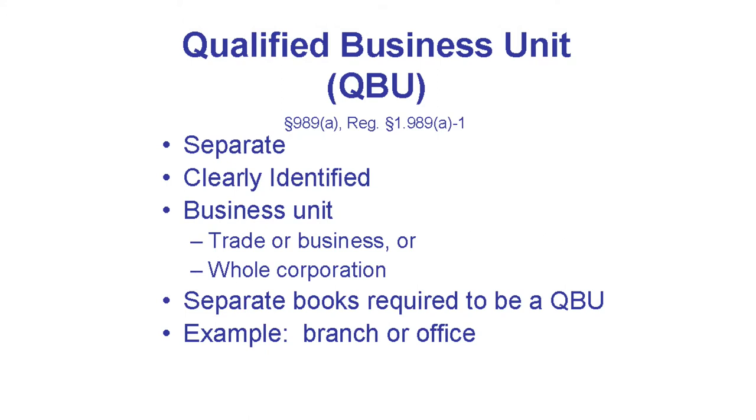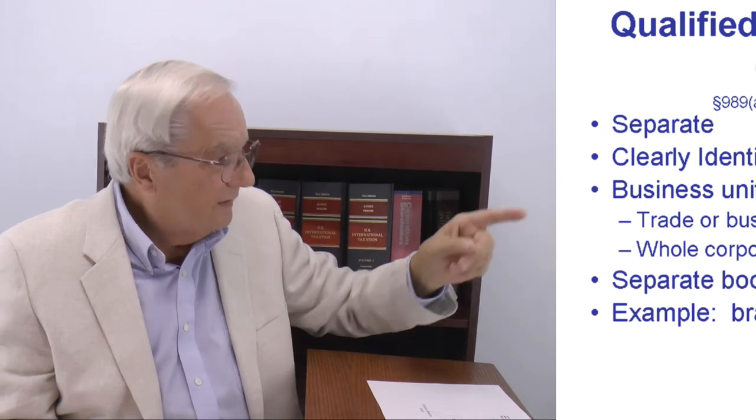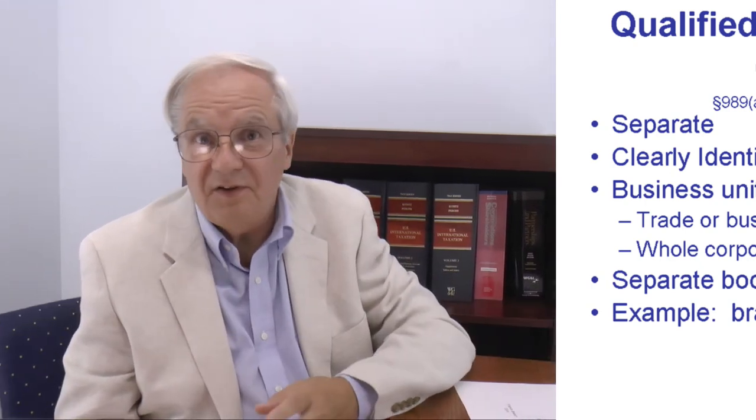So let's talk a bit more about what's a QBU. Usually the answer is obvious. A QBU must be a separate, clearly identified business unit that keeps separate books — it's really that simple. This usually means a branch or office in a different country. You might say there's no such thing as a branch for US tax rules, and that's correct for everything except the currency rules. Here, having a branch matters. Otherwise, a branch is just another pocket in the same pair of pants — it's disregarded, as explained in a prior video.